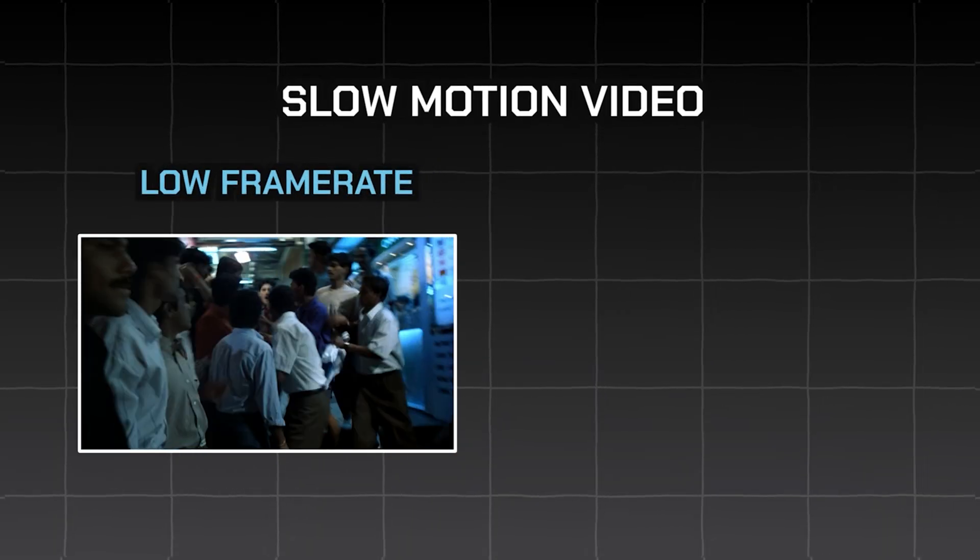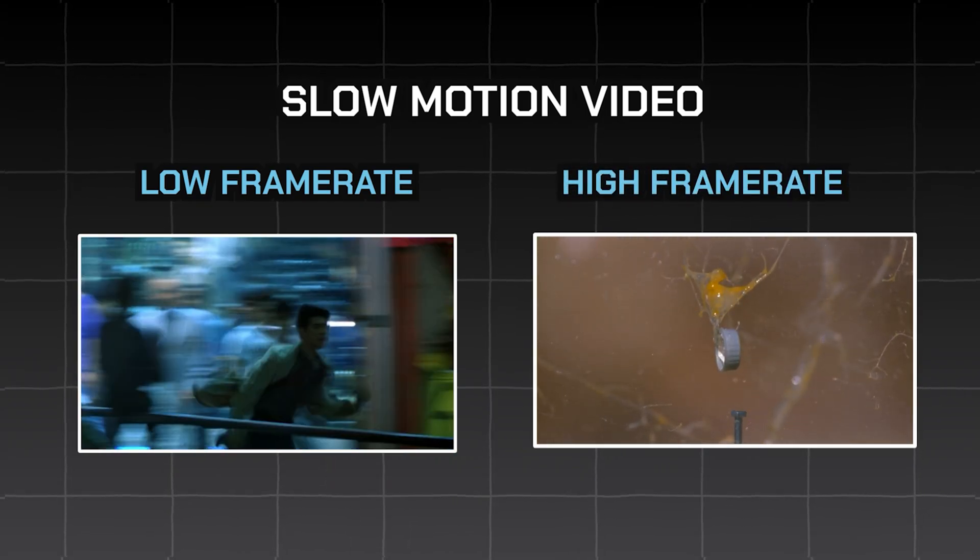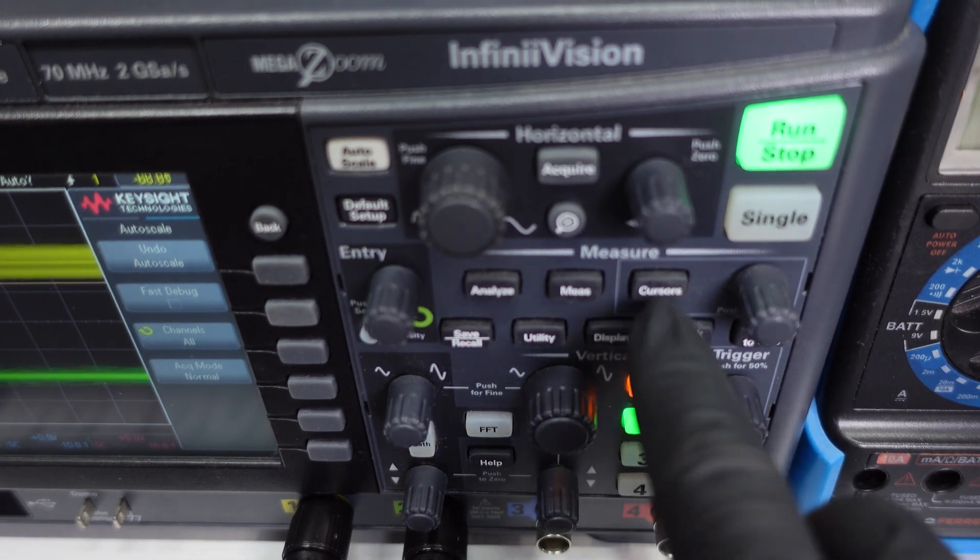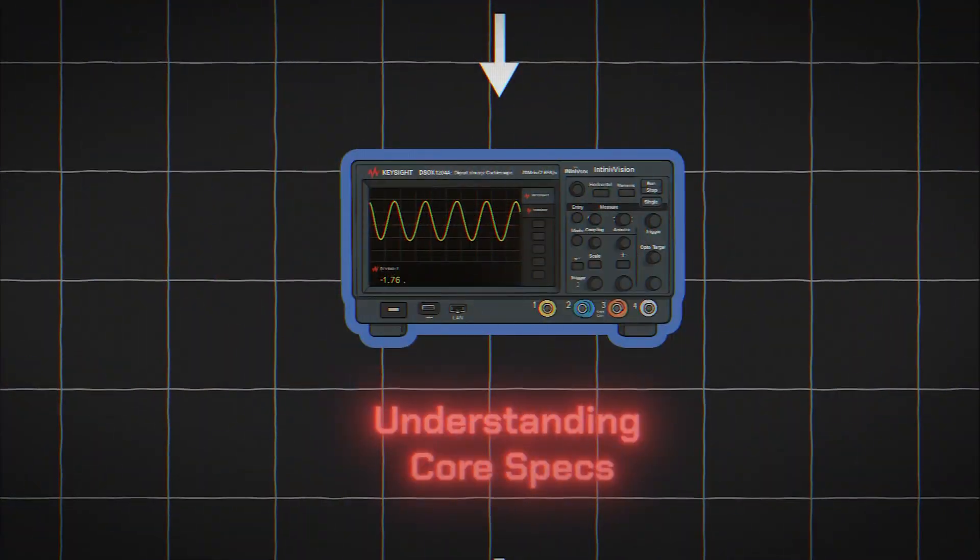Think of it like taking a slow motion video. If the frame rate is too low, the motion will look all choppy. But if the frame rate is high, you get smooth, clean detail. Next is the number of channels. Each channel lets you measure a signal, so more channels mean more signals you can measure at the same time. And with that, you're ready to start measuring signals. So let's go.